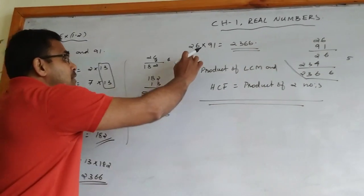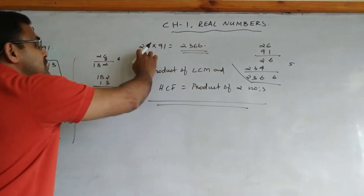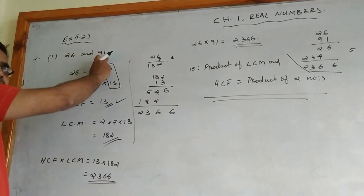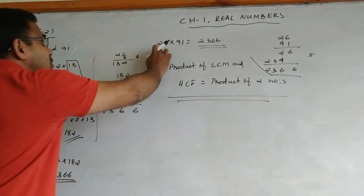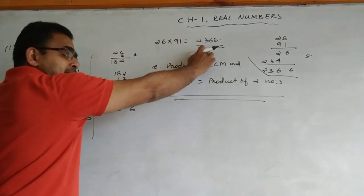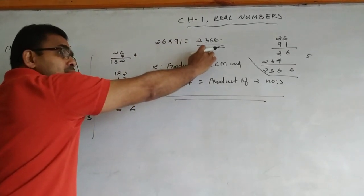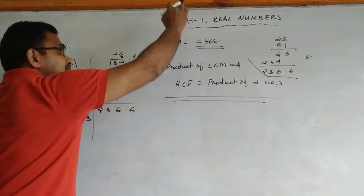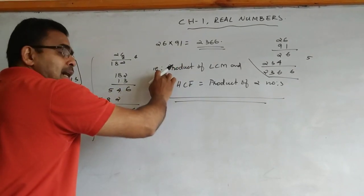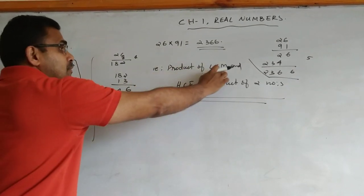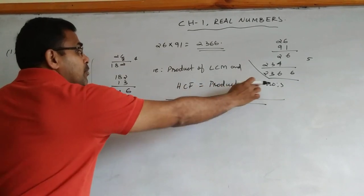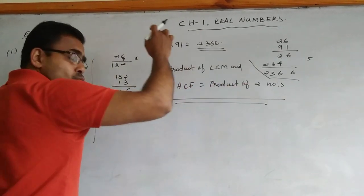The product of the two numbers 26 and 91 is also 2366. That means we can verify that the product of HCF and LCM equals the product of the two numbers.